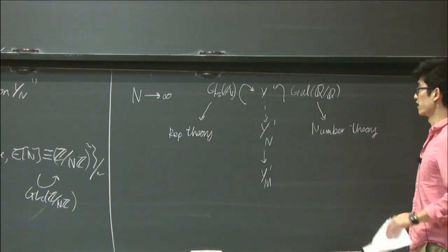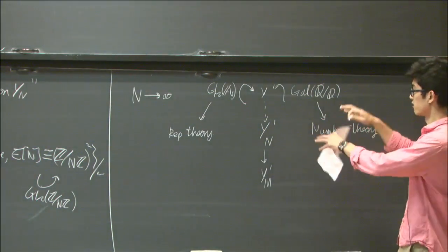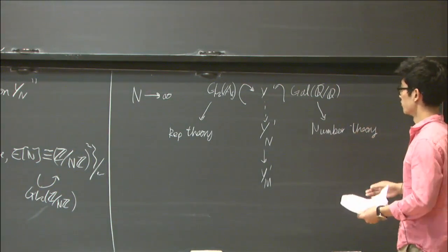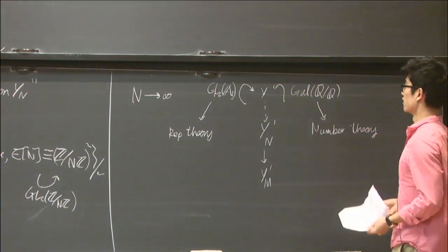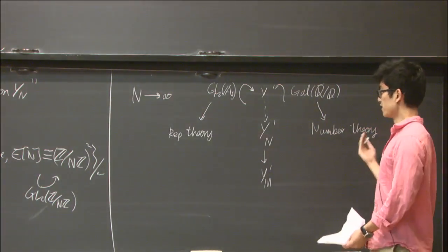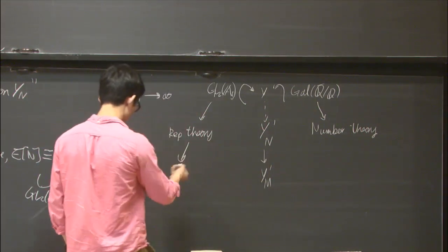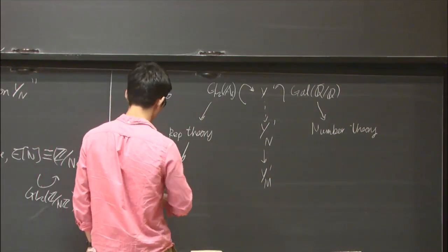The point is to try and relate these two sides. You have these two actions, very large profinite groups which act in this space. By studying how they interact, you can try and relate these two sides. To be more precise, you can express this relationship using the theory of L functions.